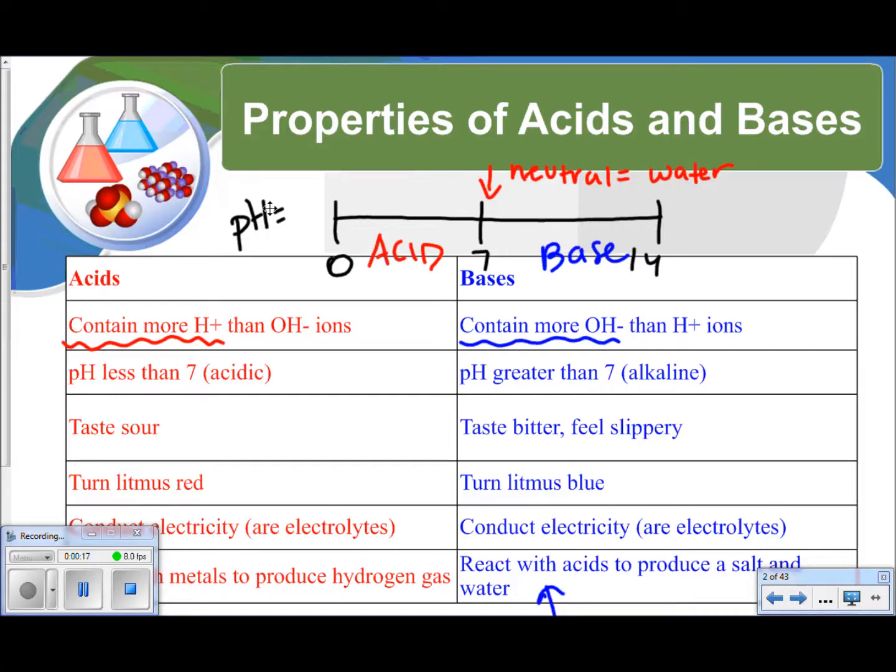The first thing I want to point out is I have a very simple pH scale drawn here. Realize the pH scale starts at 0, it goes to 14, and I've marked 7 in the middle, which is completely neutral, which would be something like water. So, less than 7 are your acids, and if it has a pH of greater than 7, that is a base.